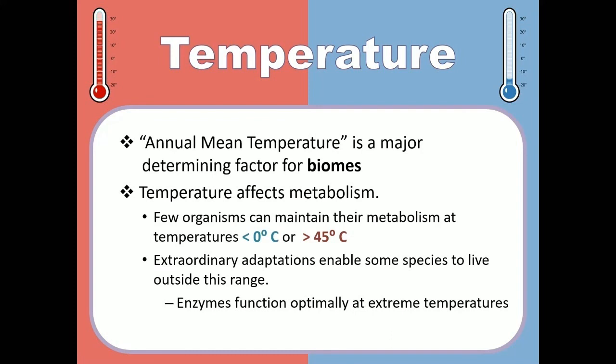A biome is a major life zone. Deserts, arctic tundra, tropical rainforests, and temperate deciduous forests are all kinds of biomes, and temperature is one of the biggest determiners of which biome you're in. Very few organisms can maintain their metabolism at very low temperatures, so only those adapted to cold will be found in Arctic biomes, and only those able to deal with extreme heat will be found in desert or tropical rainforest biomes.